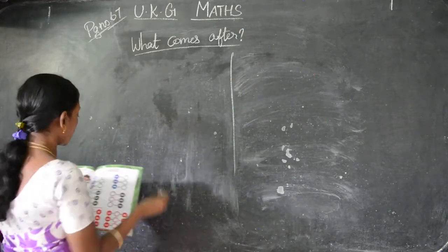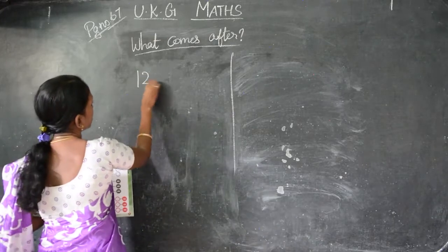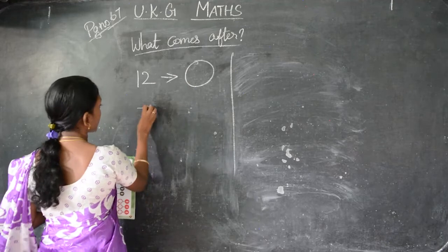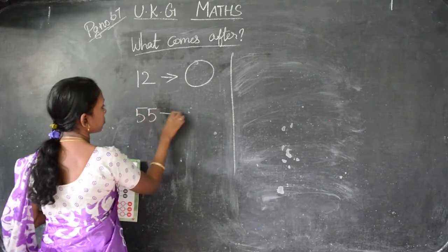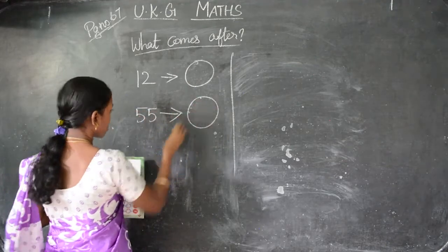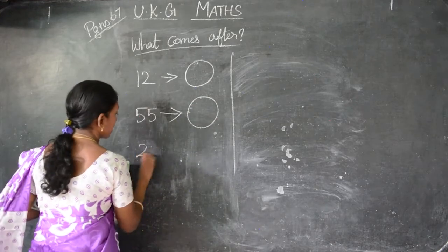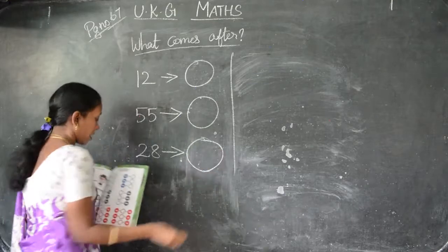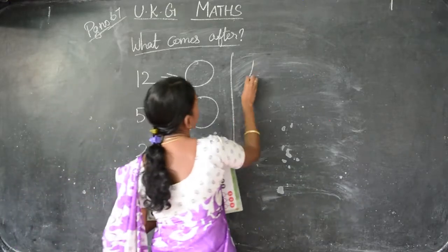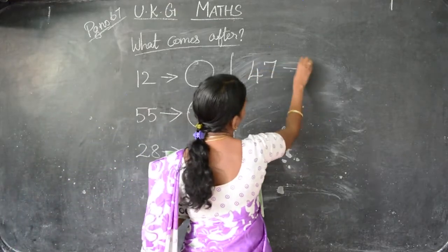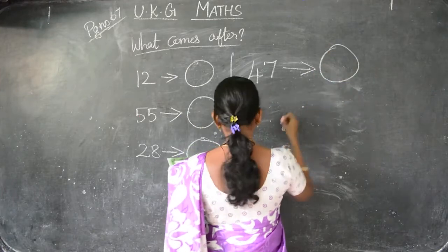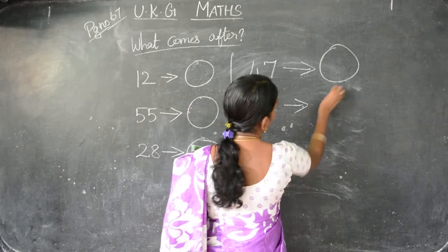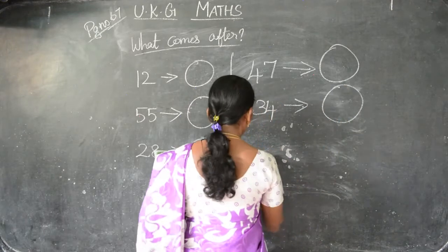Listen children. The first number is 12. After 12 what will come? Next one is 55. After 55, what will come? These are all after numbers. You have to write what comes after. Next, 47.